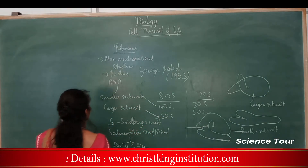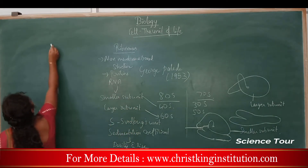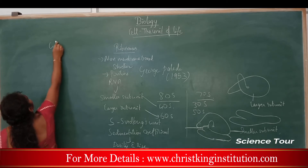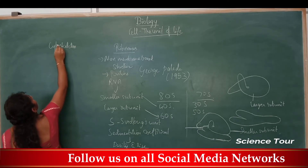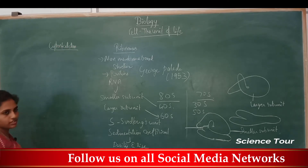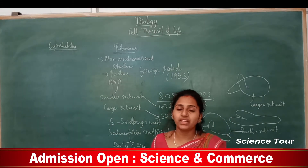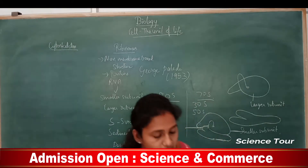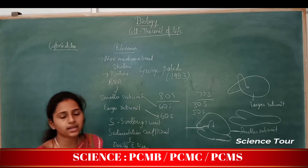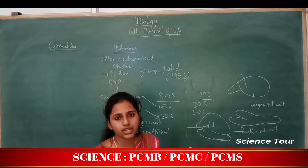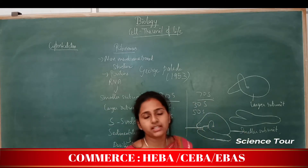Next, we will move to one more important concept: the cytoskeleton. The elaborated network of filamentous proteinaceous structures is called the cytoskeleton. Usually, the cytoskeleton is made up of a network of proteinaceous filaments.